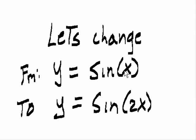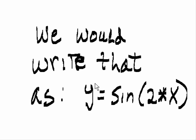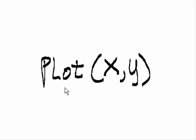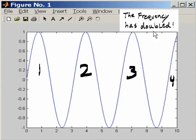Let's change from y equals sin(x) to y equals sin(2*x). Don't forget to put that in there. 2 multiplication sin(x). That's an asterisk. Then I key in plot. The frequency has doubled. 1, 2, 3, 4, approximately.